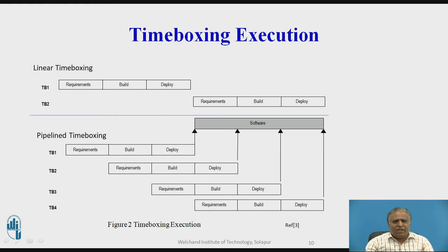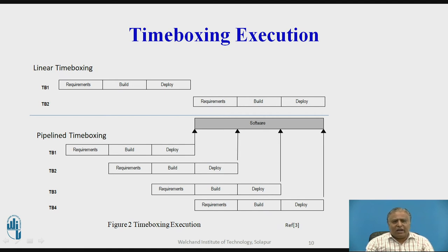In pipeline time boxing, parallel work is done. After the requirements of TB1 are finished, we start building in TB2. We also start the next tasks of requirement, build, and deploy. After finishing the work of TB3, we start the work of TB4 — meaning after finishing TB3 requirements, we start TB4 requirements. Likewise, TB1, TB2, TB3, and TB4 are all carried out in parallel, performing their operations simultaneously.